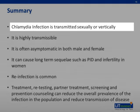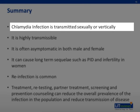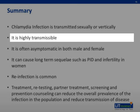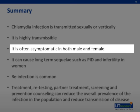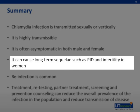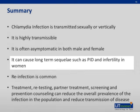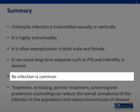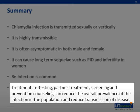In summary, chlamydia infection is transmitted sexually or vertically. It is highly transmissible and often asymptomatic in both males and females. It can cause long-term sequelae such as pelvic inflammatory disease and infertility in women. Reinfection is common. Treatment, retesting, partner treatment, screening, and prevention counseling can reduce the overall prevalence of this infection in the population and reduce transmission of the disease.